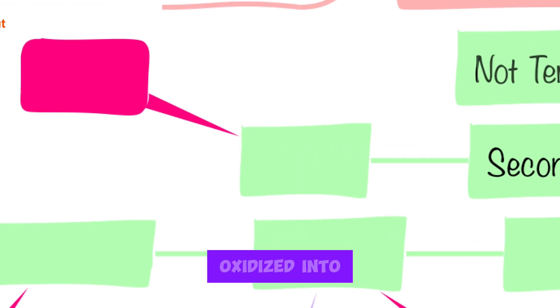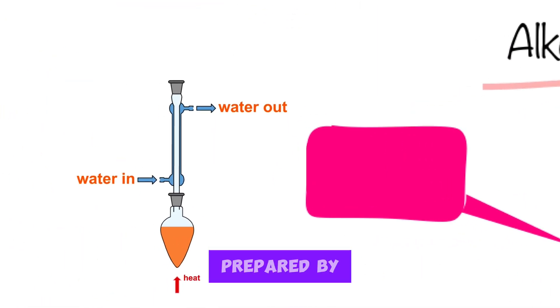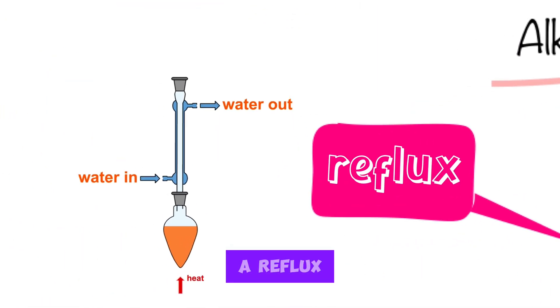Secondary alcohols can be oxidized into ketones which are prepared by heating in a reflux condenser.